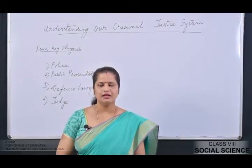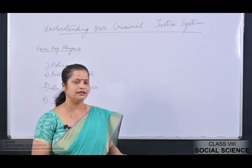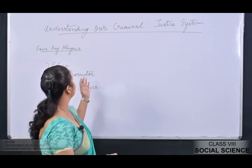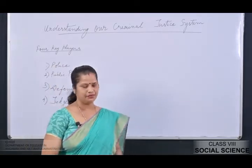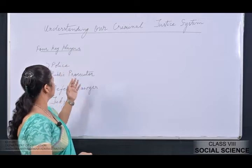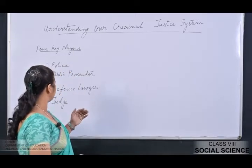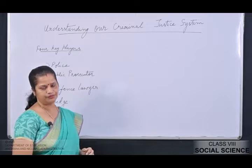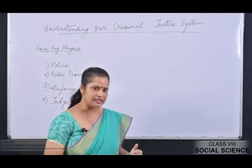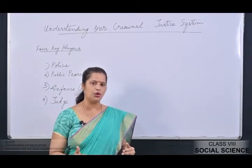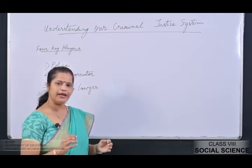Hello students. In the last class we have seen that there are four key players of our criminal justice system: number one, the police; number two, the public prosecutor; number three, the defense lawyer; and number four, the judge. Now we will discuss the functions and the role of various key players, one by one.